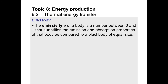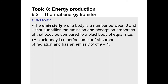If a body has an emissivity of 1, that means it is a perfect absorber and therefore a perfect emitter of radiation — that would be a black body. An example would be charcoal. Now charcoal is not a perfect black body, but it comes pretty close at 0.95. What that means is 95% of the radiation incident upon it gets re-emitted. So it's not the ideal 100%, but it's pretty close.